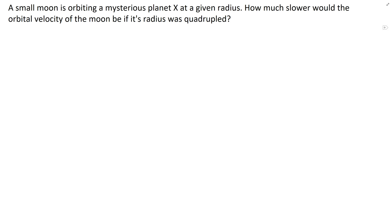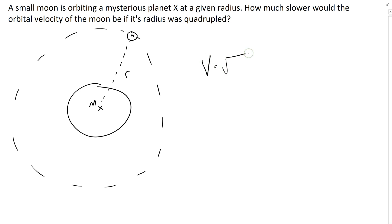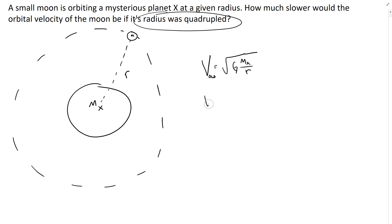A small moon is orbiting a mysterious Planet X at a given radius. The planet has a mass of m_x, the small moon has a mass of m, and the distance between them is r. The moon is going in a circle. Writing the equation for orbital velocity — v equals the square root of G·m_x over r — we think of this as the original velocity. We want to find the new velocity when the radius is quadrupled. In the new case, the gravitational constant and the mass of Planet X stay the same, but instead of r we now have 4r.